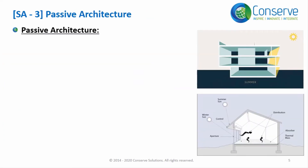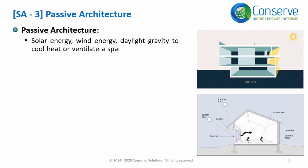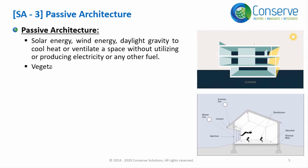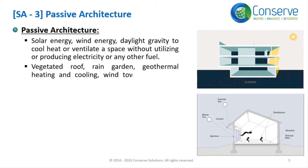Passive Architecture is a system that utilizes natural resources like solar energy, wind energy, daylight, and gravity to cool, heat, or ventilate spaces without utilizing or producing electricity. Examples of Passive Architecture are vegetated roof, rain garden, geothermal heating and cooling, wind tower, courtyard, overhangs, fins and balconies.